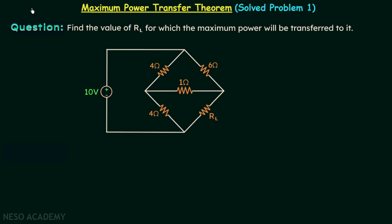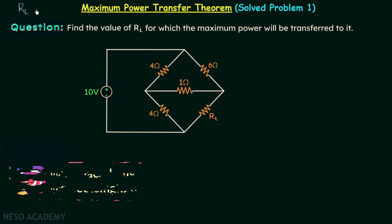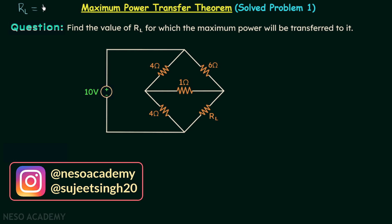In the previous lecture we had a discussion on maximum power transfer theorem for DC circuits, and we saw that the maximum power will be transferred to the load resistance when the value of load resistance is equal to the Thevenin's equivalent resistance of the network. Now in this presentation we are going to solve problem number one on maximum power transfer theorem.